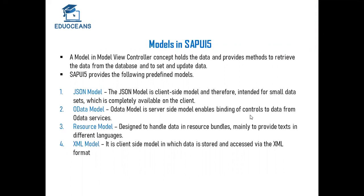The generic difference between the OData model and the JSON model is that the JSON model is a client-side model, whereas the OData model is a server-side model. If there is a server or you need to fetch any data from a backend, you generally use the OData model.